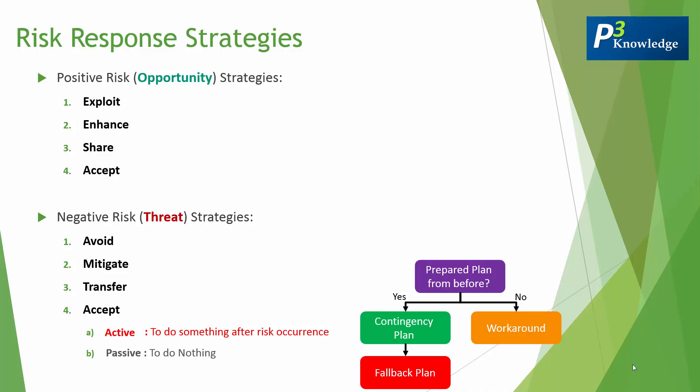What's the difference between avoid, mitigate, and transfer versus active acceptance? Avoid, mitigate, and transfer are strategies you need to execute before the risk happens, while active acceptance is doing something after the risk happens.